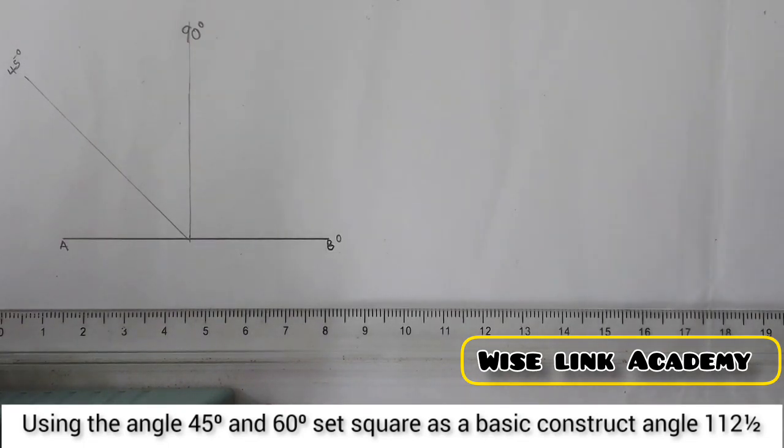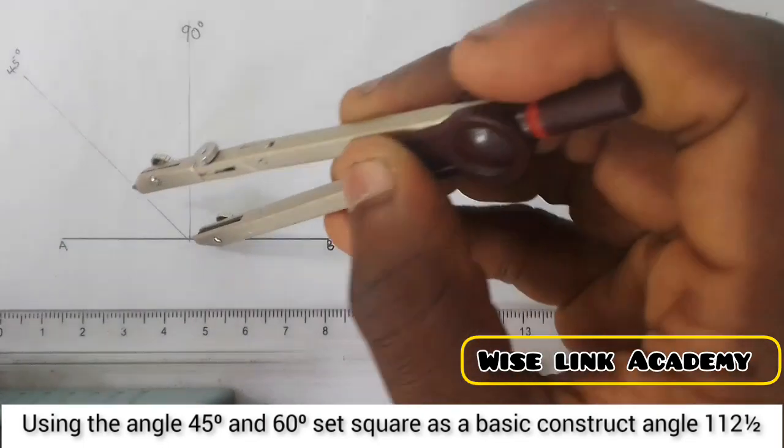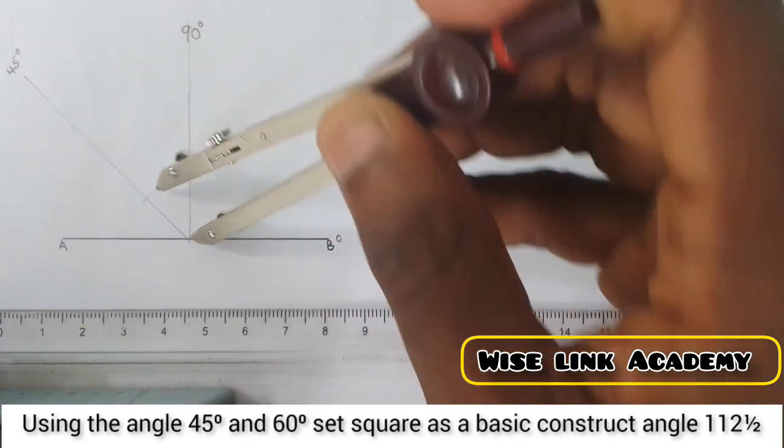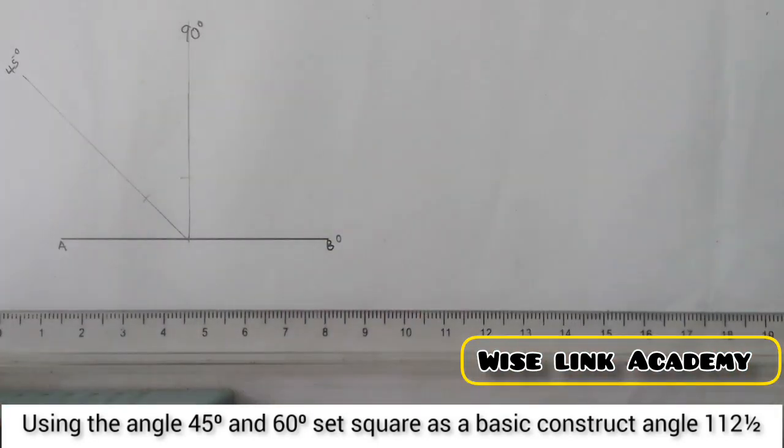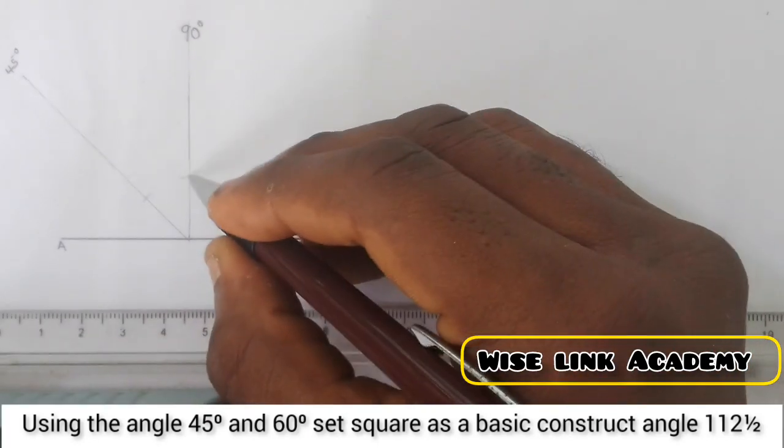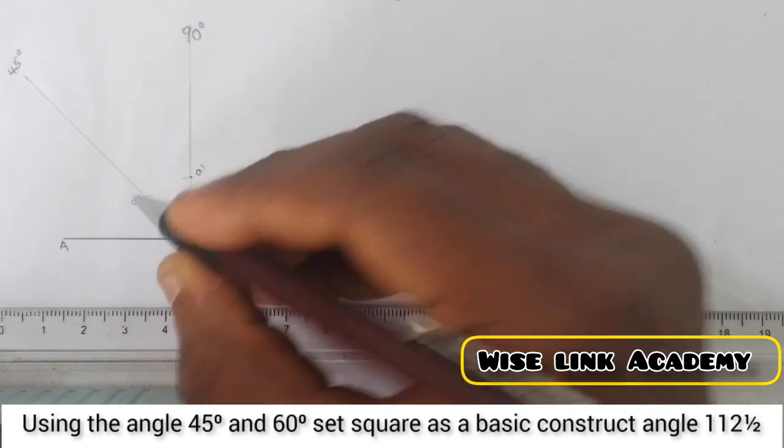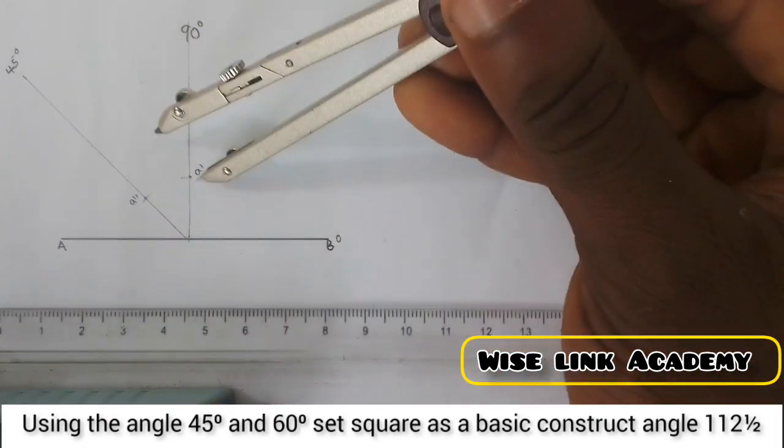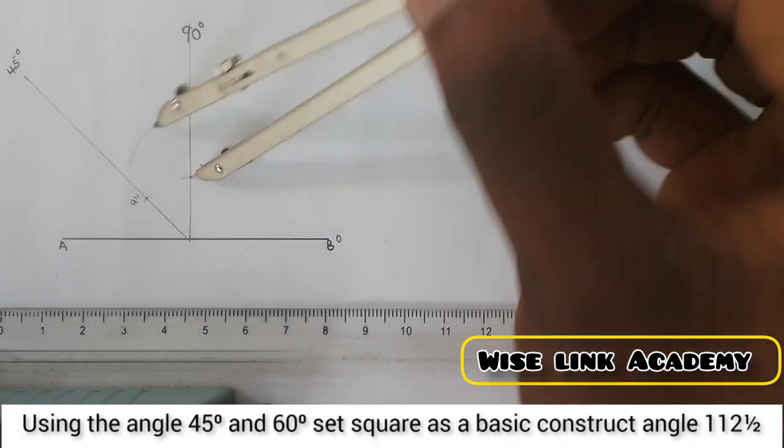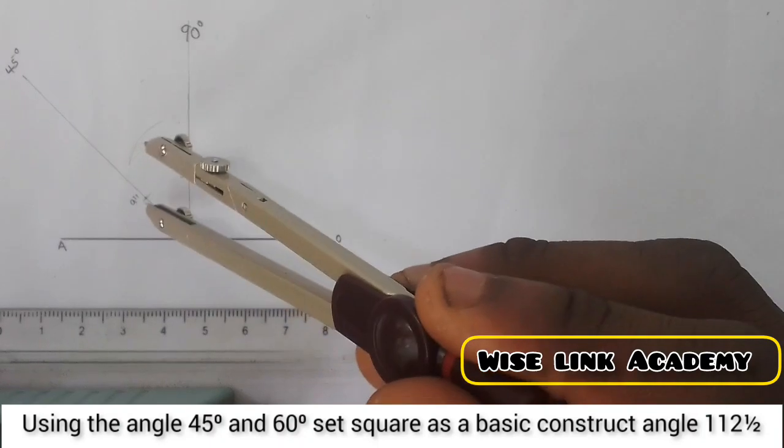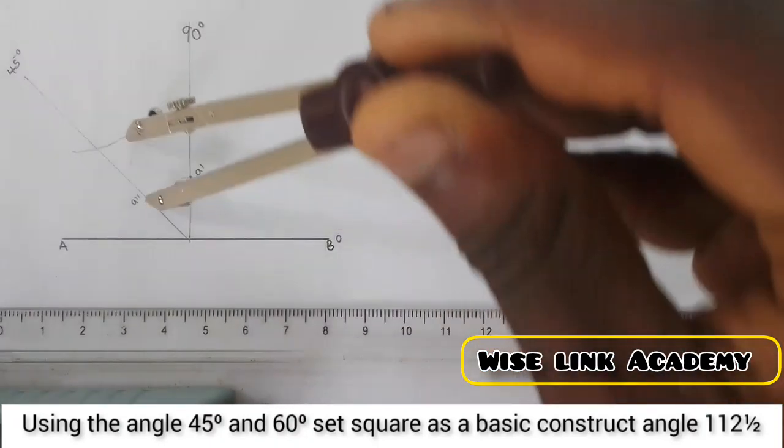So therefore, I will take my compass at this point, just draw an arc here. With the same radius, take it to this point. Let's call this point my point A prime, here becomes A double prime. At point A prime, kindly just cut an arc, come to A double prime and cut the arc.